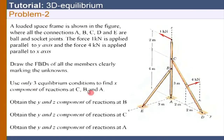There are 3 unknowns — Cx, Bx, and Ax — that need to be found using 3 equilibrium conditions, and then the other components of those reactions can be found. The trick in this problem: can you identify the two-force member? Is there a two-force member? Once you identify it, the problem becomes very simple.